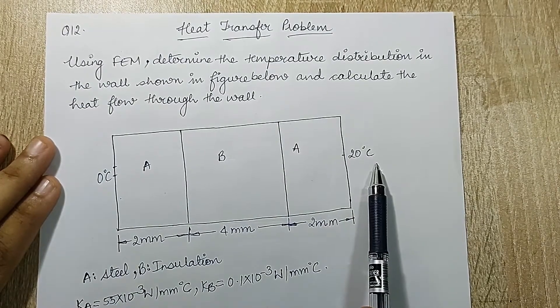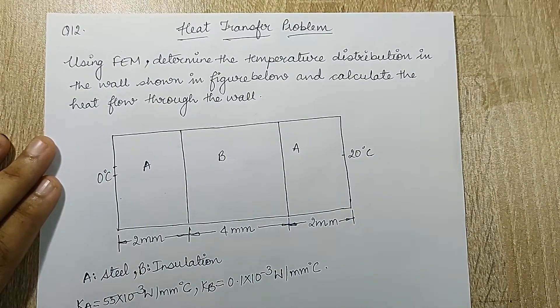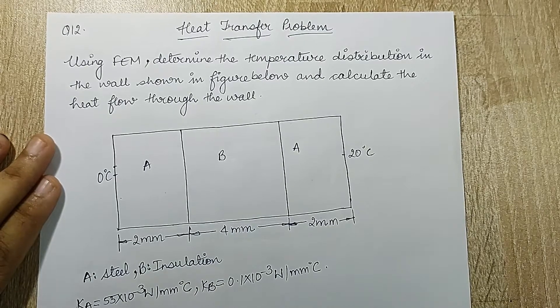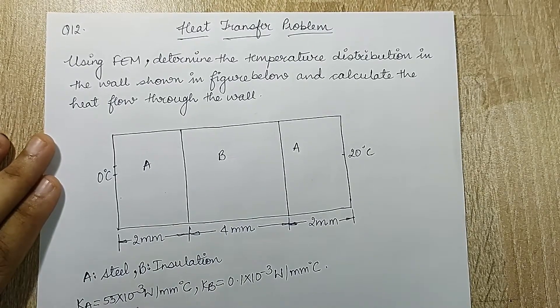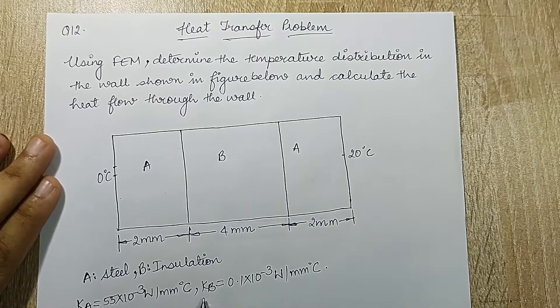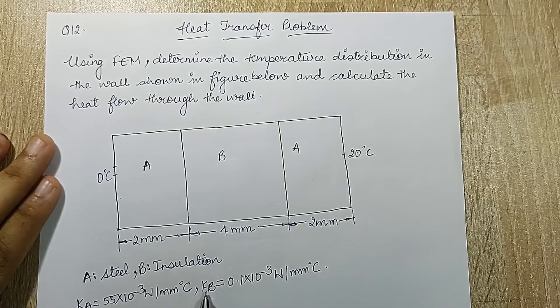A is steel, B is insulation, and A is again steel. At one end the temperature is 0 degrees Celsius and the other end the temperature is 20 degrees Celsius. The value of thermal conductivity k for steel is given as 55 into 10 raise to minus 3 watt per mm degree Celsius.